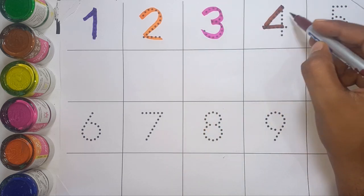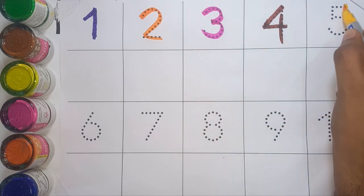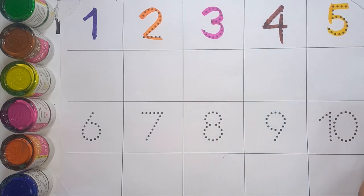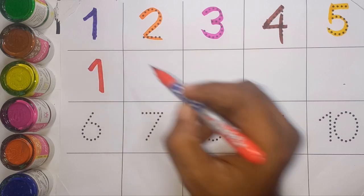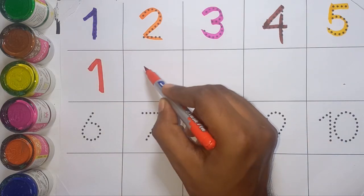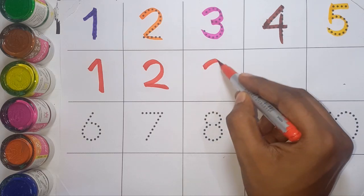Four, F-O-U-R, four, yellow color. Five, F-I-V-E, five, red color. One, one. Two, T-W-O, two. Three, T-H-R-E-E, three.